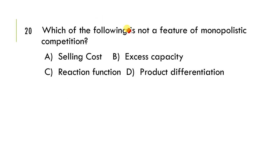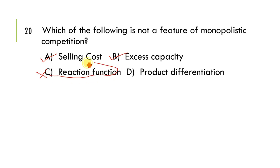Next: which of the following is not a feature of monopolistic competition? Selling cost — yes, a feature. Excess capacity — yes, a feature. Reaction function — this is not a feature of monopolistic competition; it is a feature of oligopoly. Product differentiation — yes, a feature. So C — reaction function — is the correct answer, as it is not a feature of monopolistic competition.